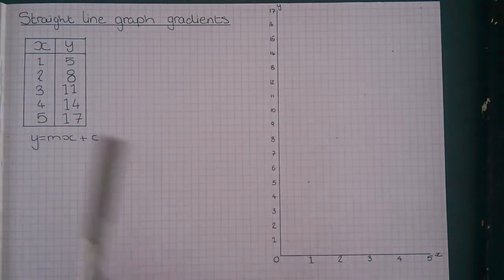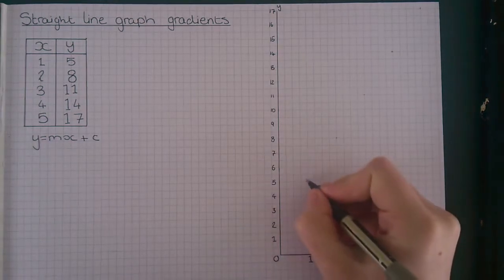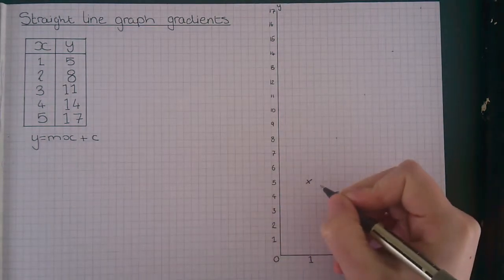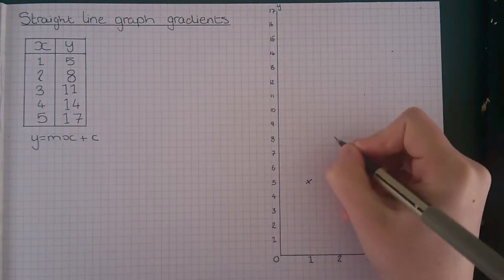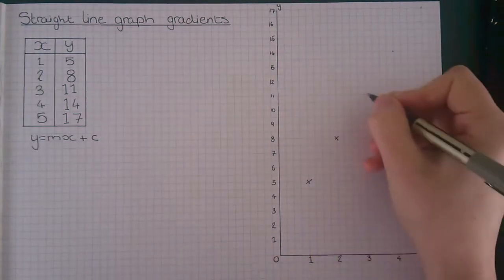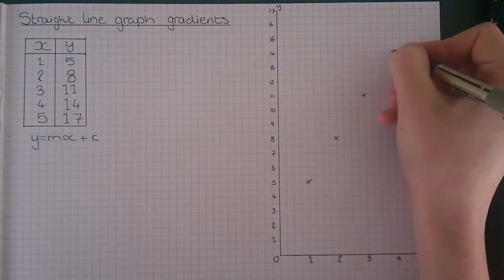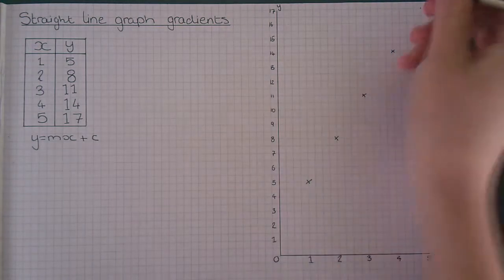The first point in our graph is 1, 5, so go across to 1 and up to 5. Next is 2, 8, then 3, 11, then 4, 14, and 5, 17.